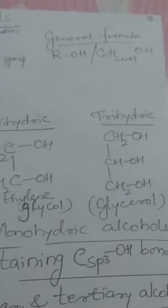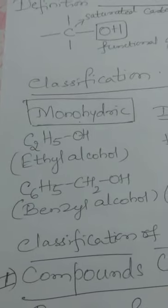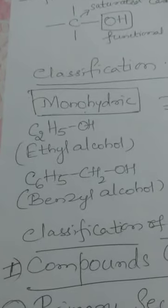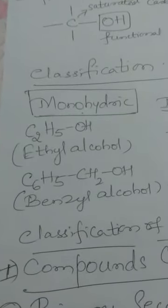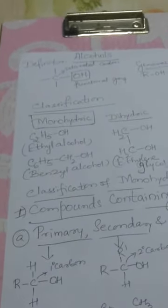Monohydric alcohols containing one OH group are further classified based on the hybridization of the carbon atom to which the OH group is attached. For compounds containing an SP³–OH bond, that is, the hydroxy group bonded to an SP³ hybridized carbon atom of an alkyl group, they are of the following types.